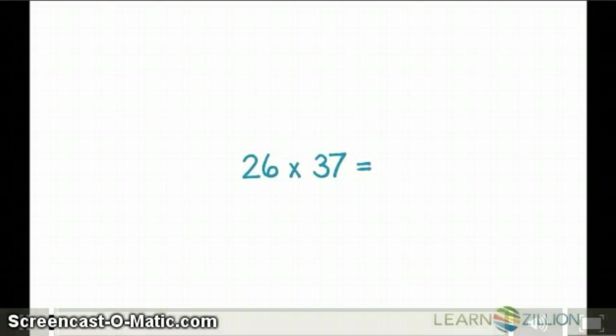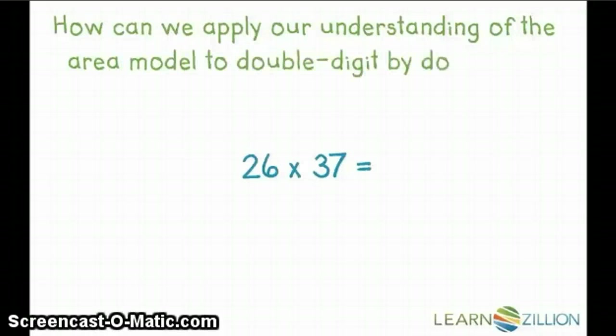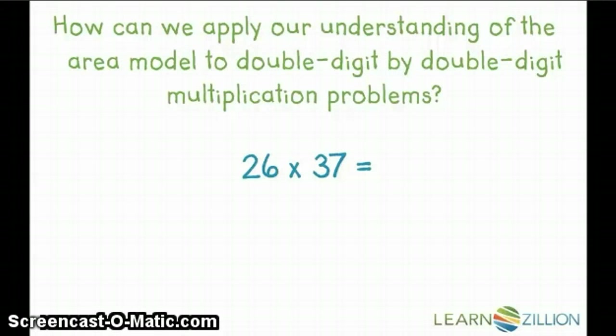Two-digit by two-digit multiplication, believed by some to be the most challenging of fourth-grade maths. But how can we apply our understanding of the area model to double-digit by double-digit multiplication problems?